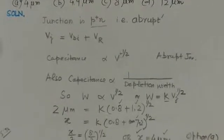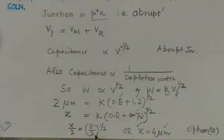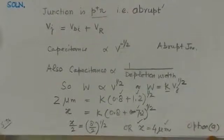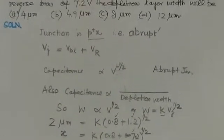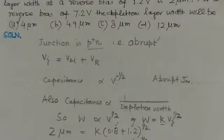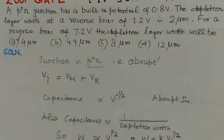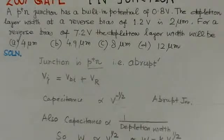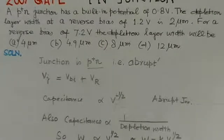Solving, X divided by 2 equals the square root of 8 divided by 2, which gives X equals 4 micrometers. The depletion width is 4 micrometers for the given reverse bias voltage. This is option A, the correct choice.